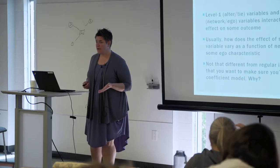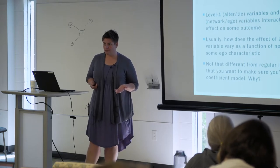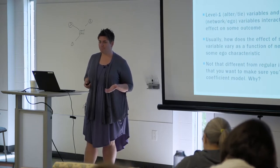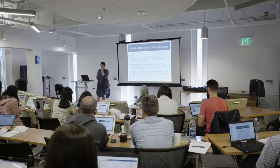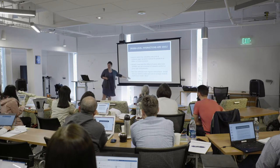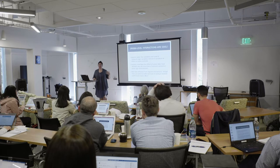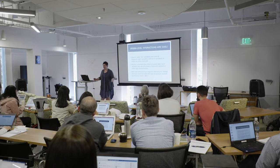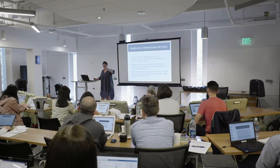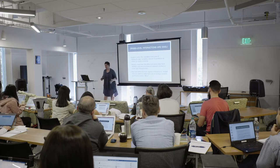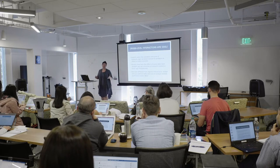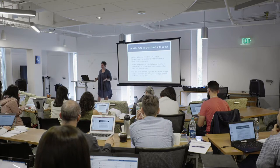This is not that different from regular interactions, except that you want to make sure you're using a random coefficient model. Why? Because in doing this interaction, you are explicitly theorizing that the effects should differ across levels. So we should allow those slopes to vary and not constrain them to be equal. If they vary systematically by something at level one, they should also be allowed to vary by other characteristics that are measured or unmeasured.